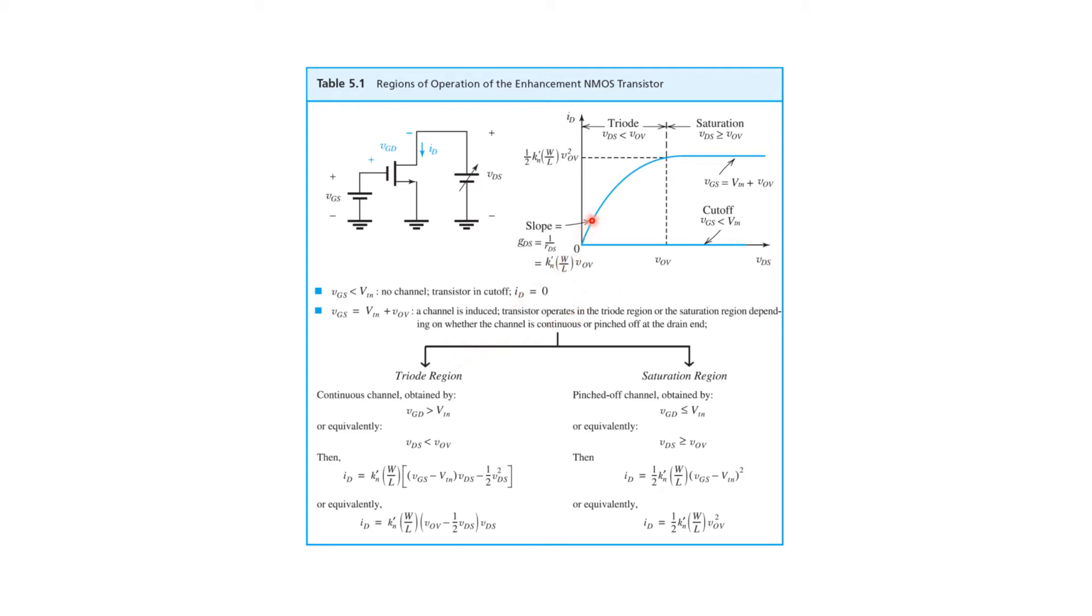And that situation persists until VDS starts approaching the overdrive voltage, at which time a quadratic relationship takes hold, captured by this expression here. And then finally we enter saturation, the transition being VDS sat, which is approximately equal to the overdrive voltage itself. From then on, we have a drain current that's predicted by the classic square law.